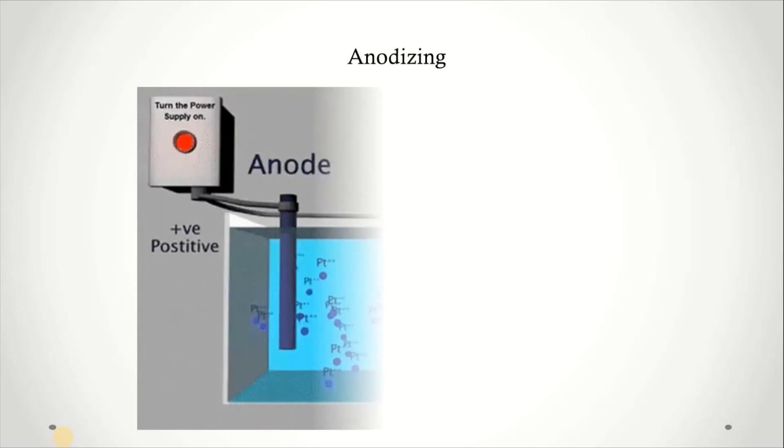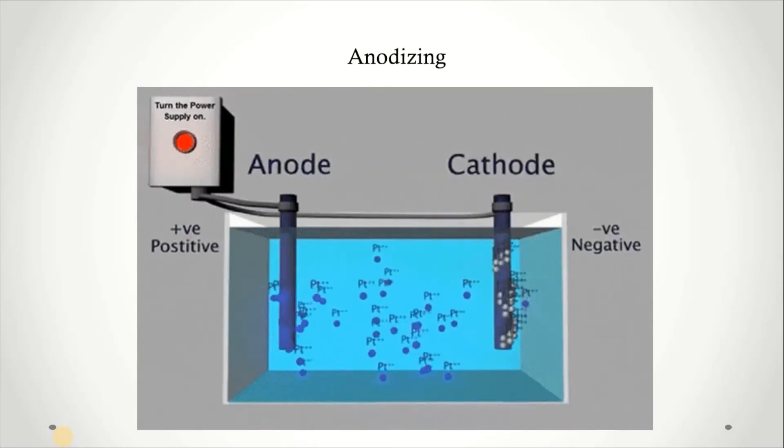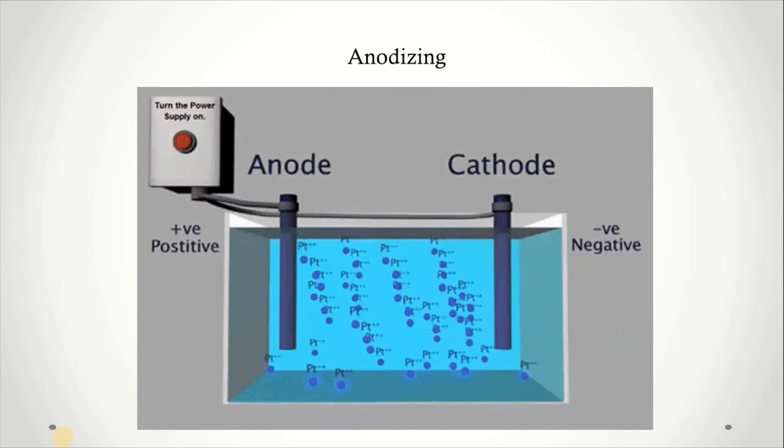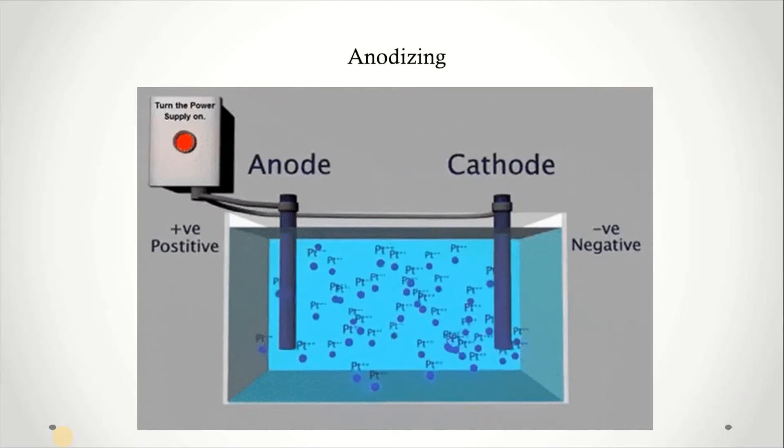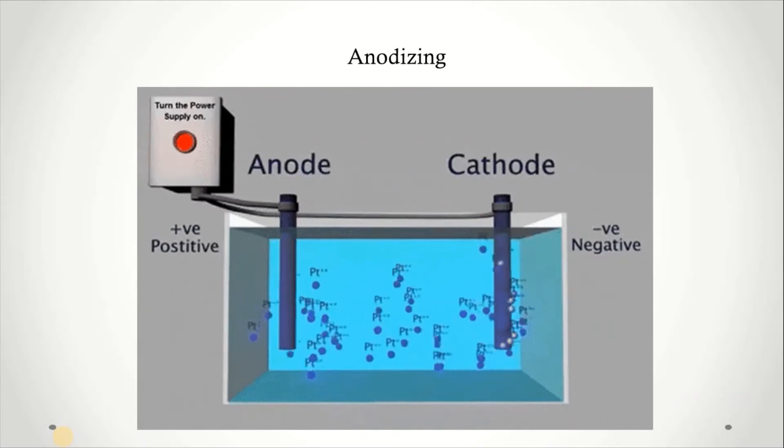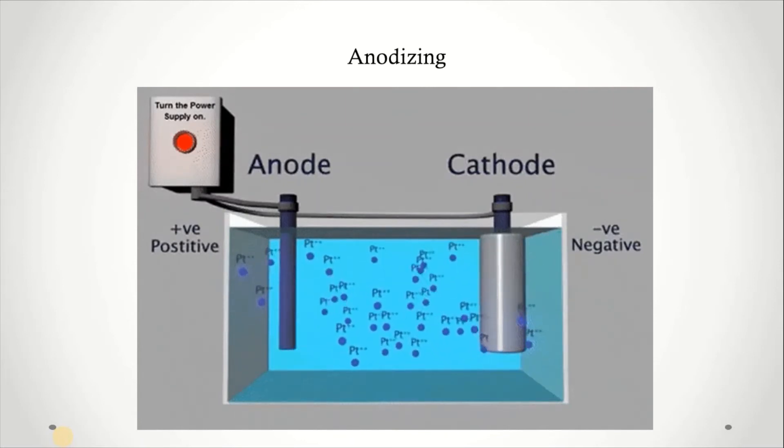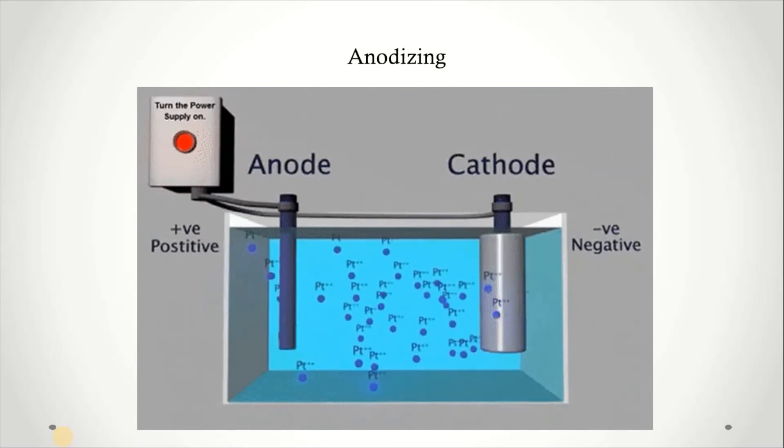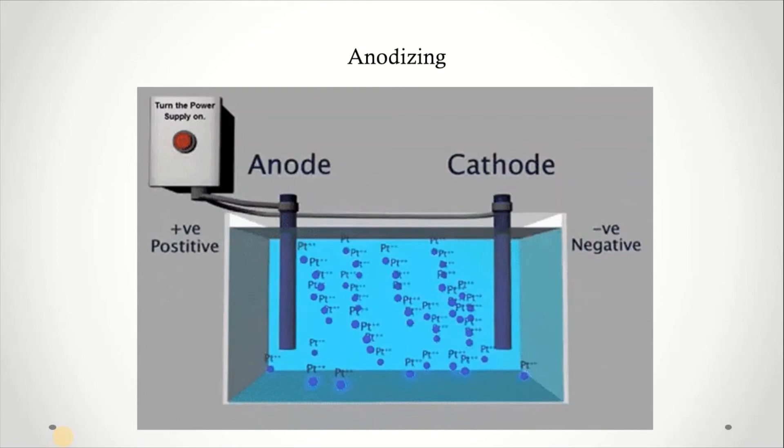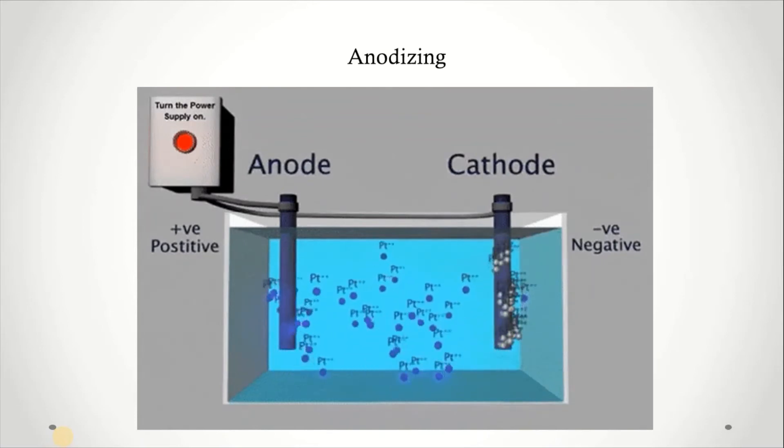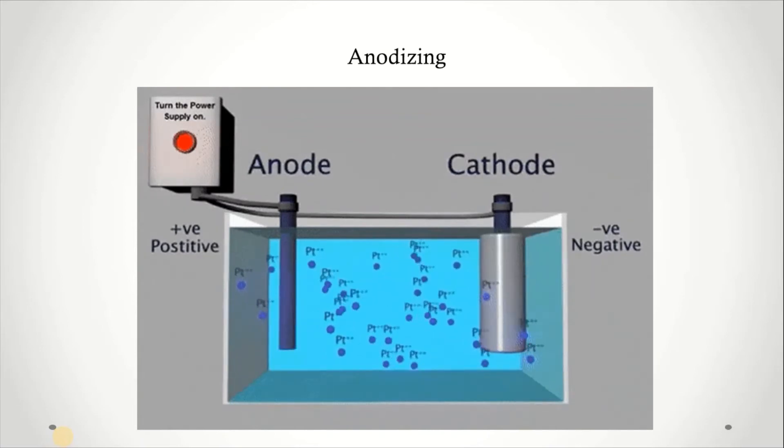Next one is anodizing. Anodizing is an electrochemical process that converts the metal surface into a decorative, durable, corrosion resistant anodic oxide finish. Aluminum is ideally suited to anodizing, although other non-ferrous metals such as magnesium or titanium also can be anodized. An anodized finish is chemically stable, will not decompose, and is non-toxic. It is not hazardous and produces no harmful or dangerous byproducts.